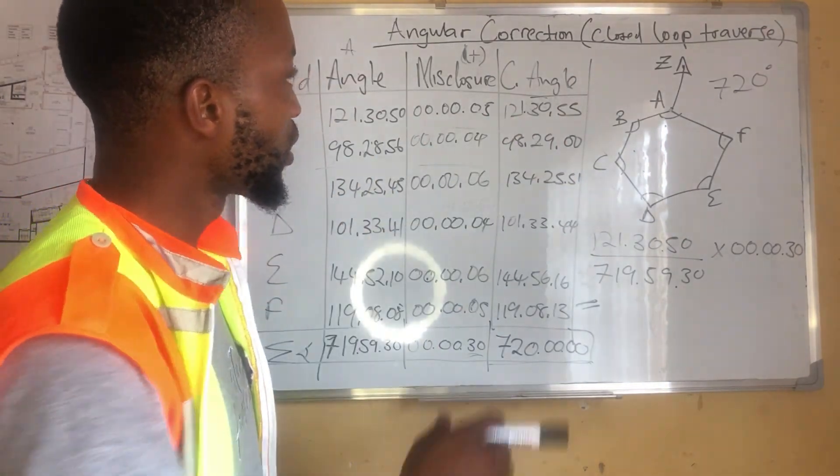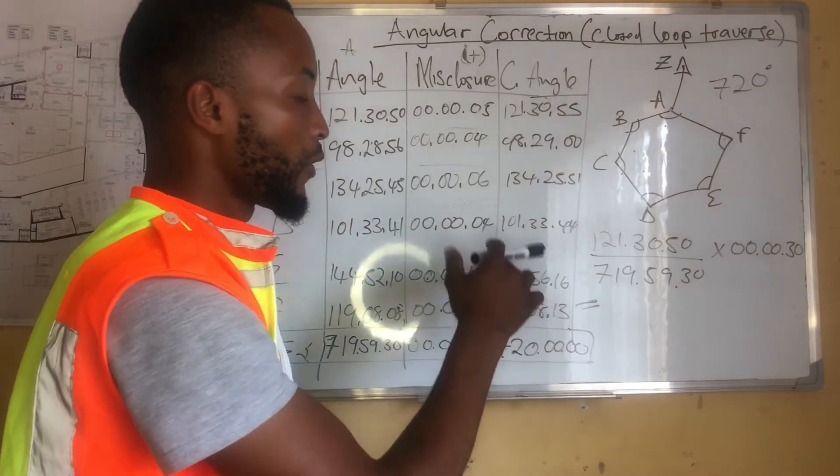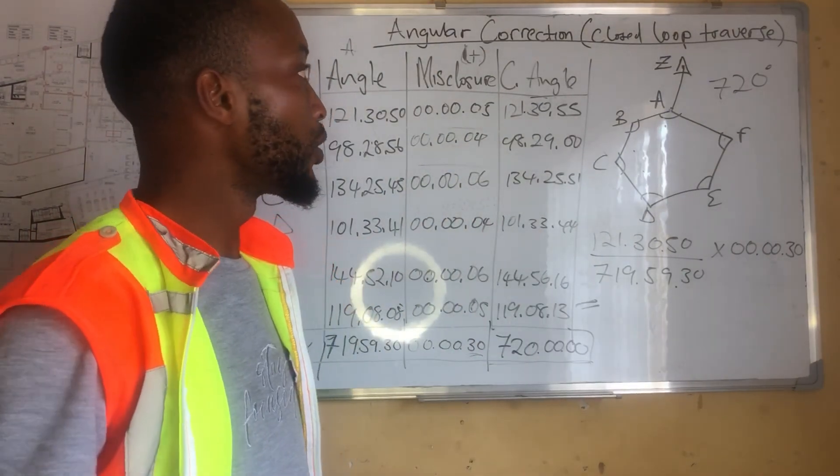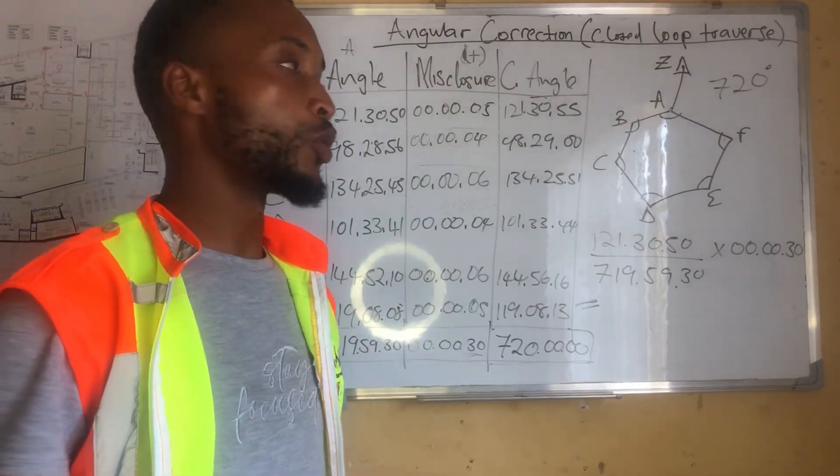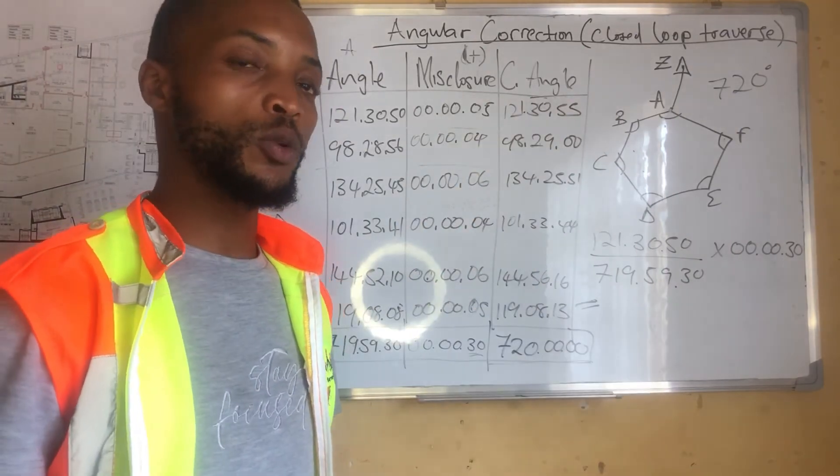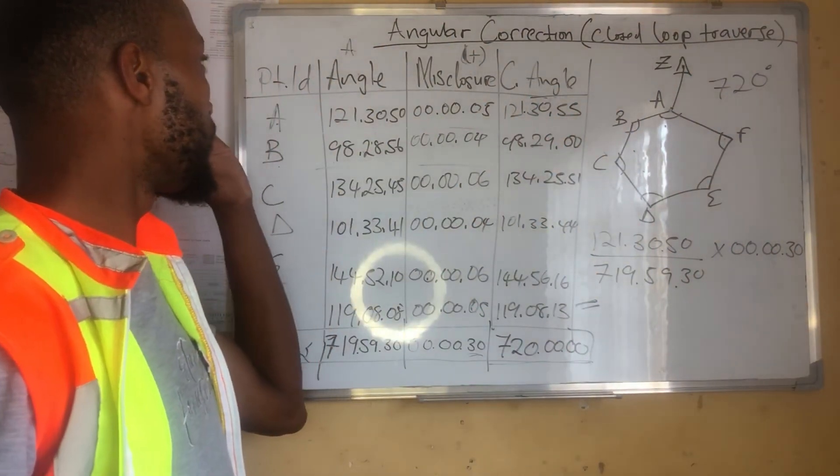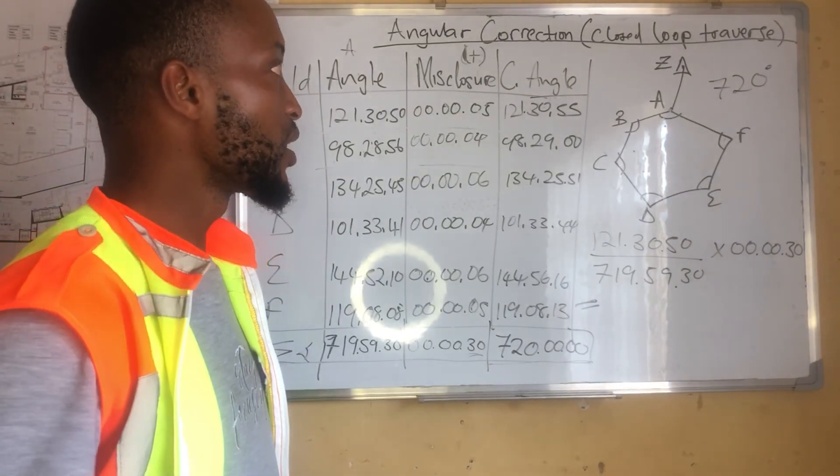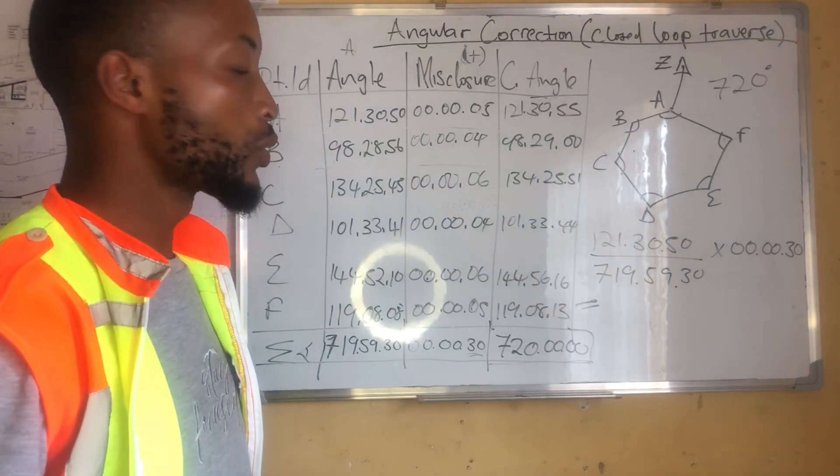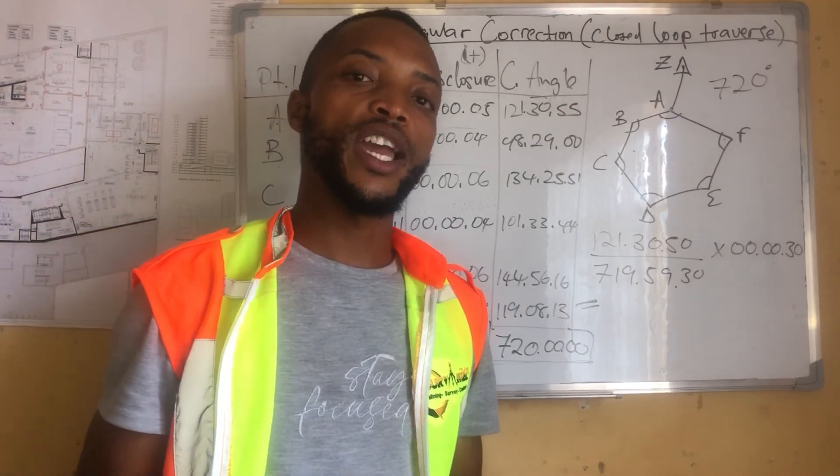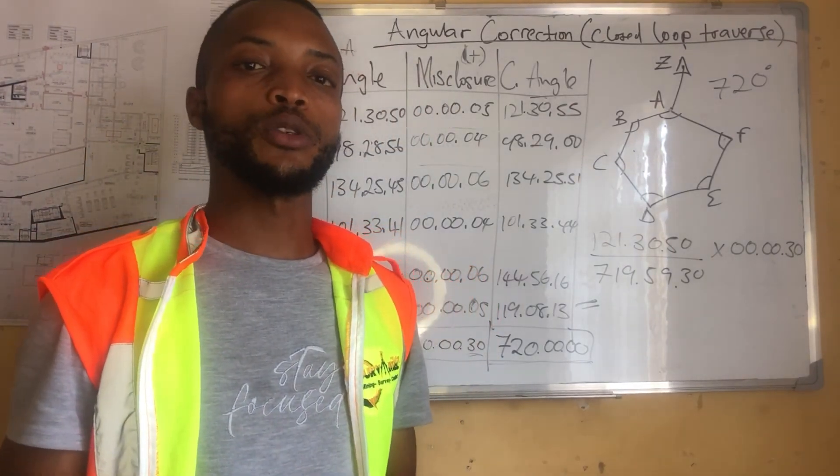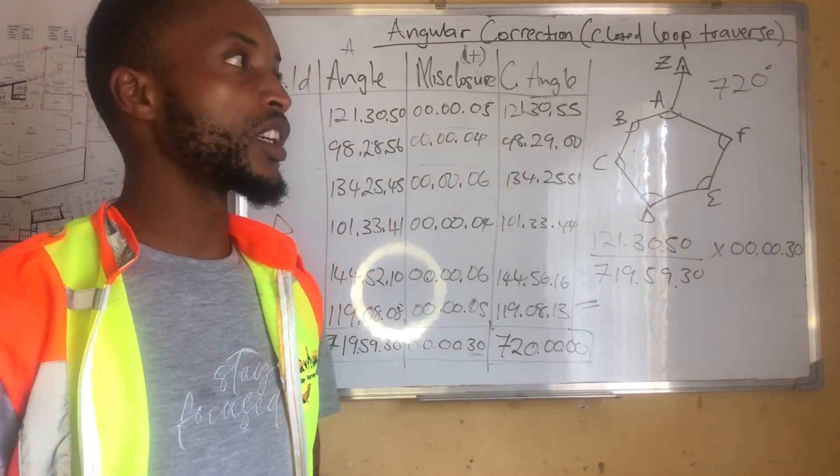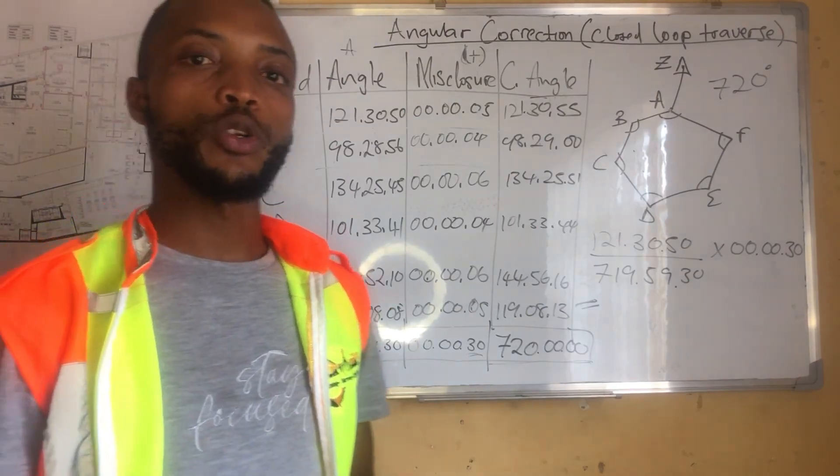The correction. Now, these are the corrected angles. From then, we will show you on how to use these angles going forward for a closed loop traverse, on how to get our coordinates for the points. We'll be doing that in our next video. Thank you so much. Please don't forget to like, subscribe, and share our videos so that we can continue making more videos for you. Thank you so much. Enjoy.